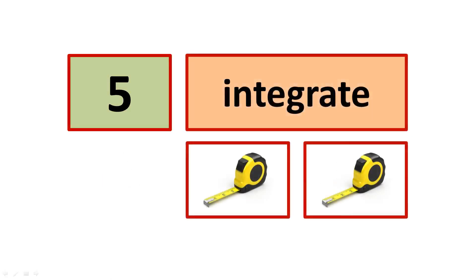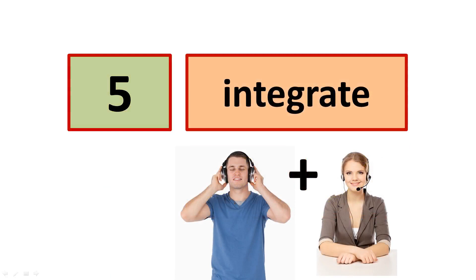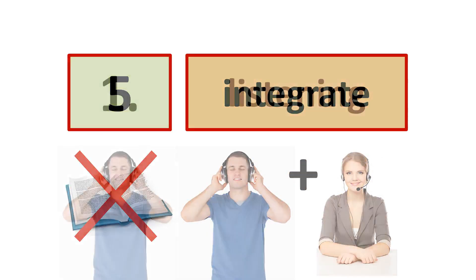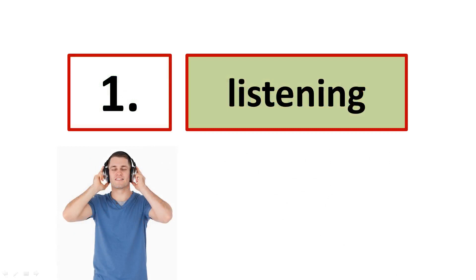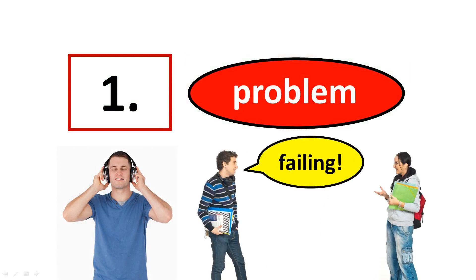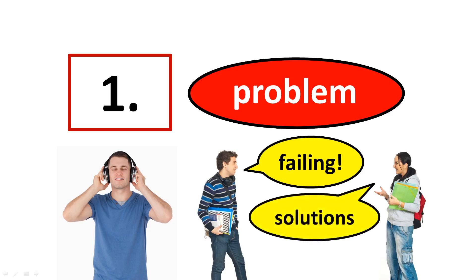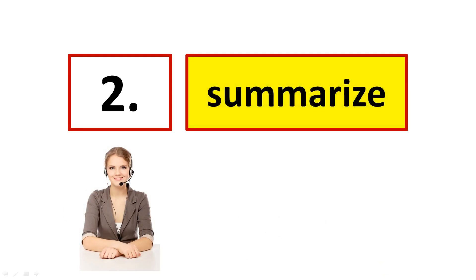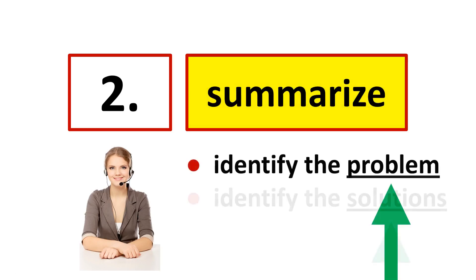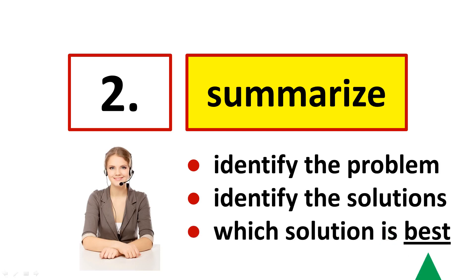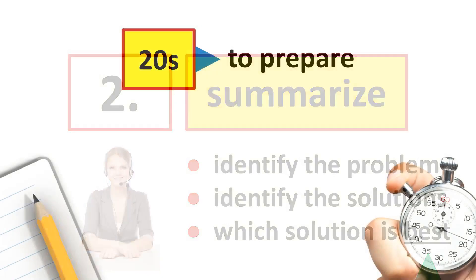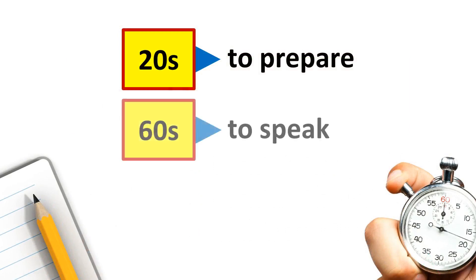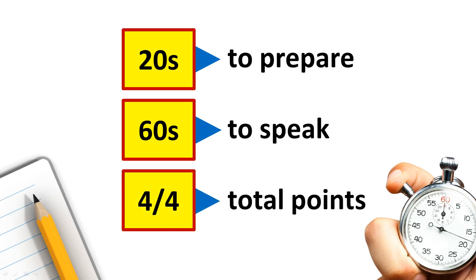Next is speaking task 5. This task measures your ability to integrate two skills: listening and speaking. There is no reading. Step 1 is listening — you will listen as two students discuss a problem; for example, one student is failing a course, and the other student will offer solutions. Step 2 is speaking — you will summarize the student dialogue, identify the problem and the solutions, and then state which solution you think is best and why. You will have 20 seconds to prepare and 60 seconds to speak. This task is scored out of four total points.